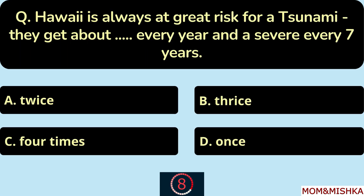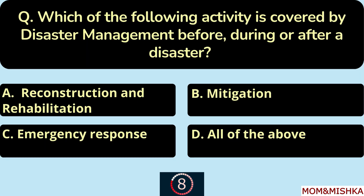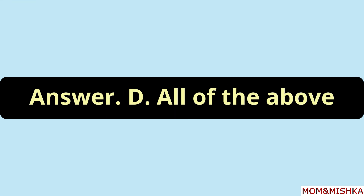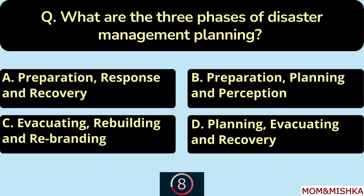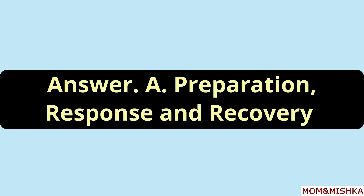Hawaii is always at great risk for a tsunami. They get about one every year and a severe one every 7 years — option D. Disaster management covers activities before, during, or after a disaster — all of the above activities, option D. The three phases of disaster management planning are preparation, response, and recovery — option A.